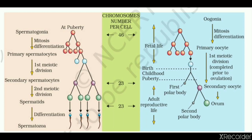During adult reproductive life, the secondary oocyte divides into a mature ovum and a second polar body. In summary, spermatogenesis begins only at puberty, while oogenesis depends on the synthesis of oogonia during the entire fetal life of the female.